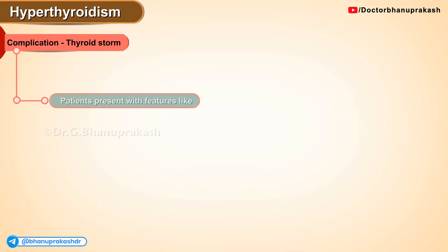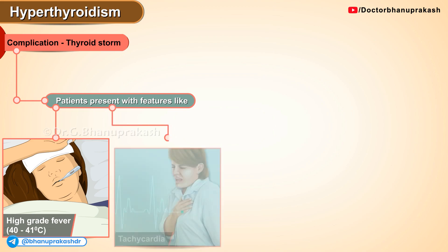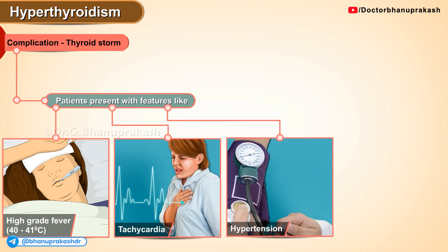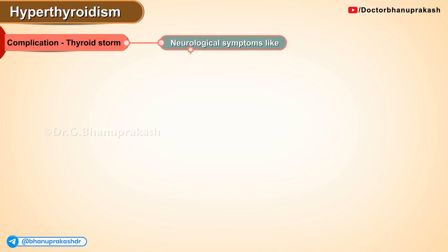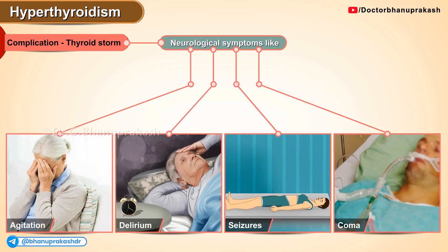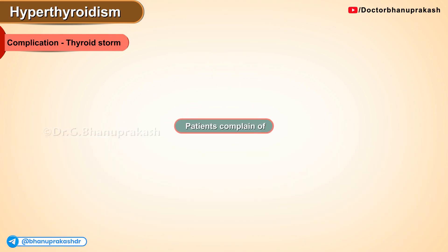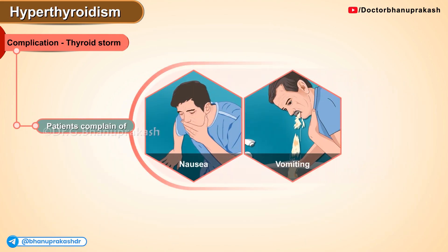Patients present with features like very high fever, which can be as high as 40 to 41 degrees Celsius, along with tachycardia, hypertension, symptoms of congestive heart failure, and arrhythmias. Neurological symptoms like agitation, delirium, seizures, or coma are not uncommon, and patients can also complain of nausea, vomiting, and diarrhea.